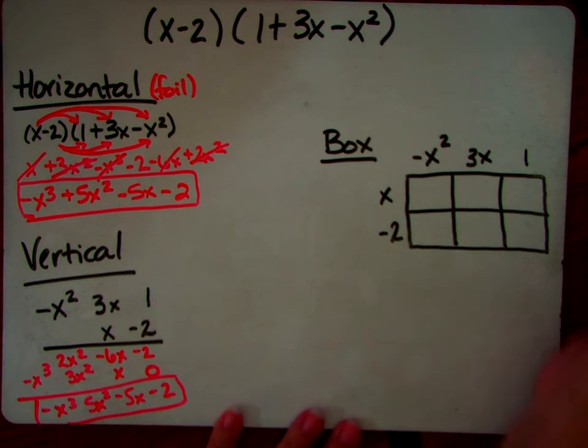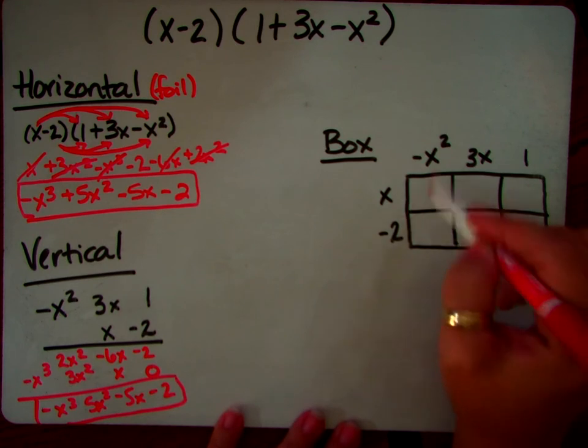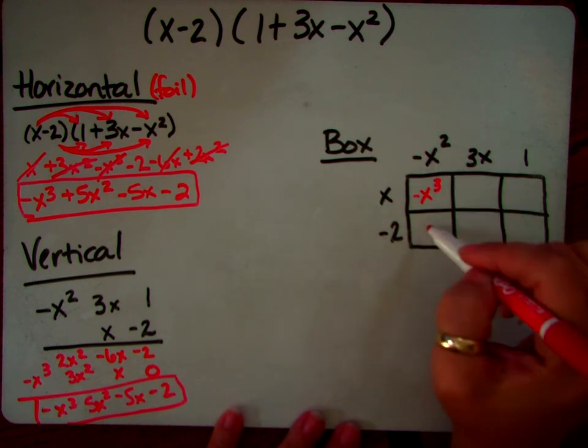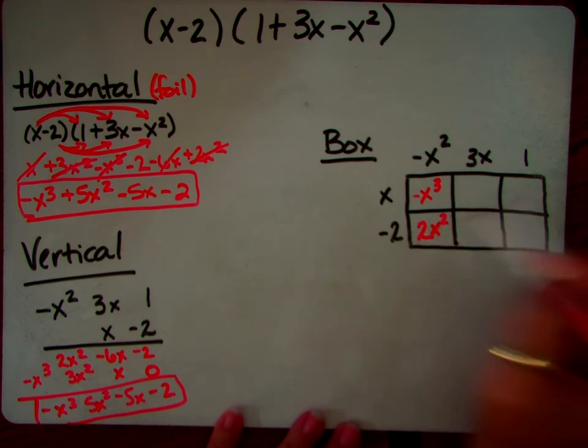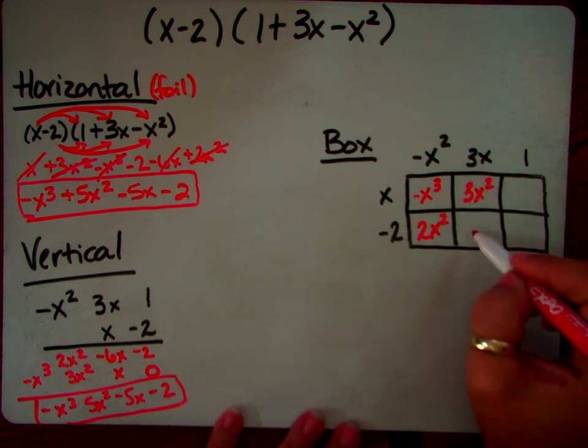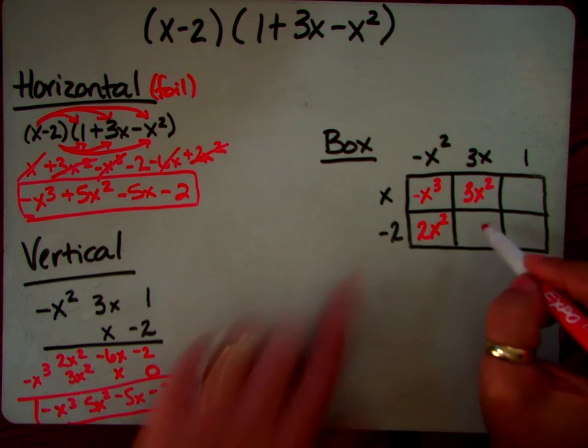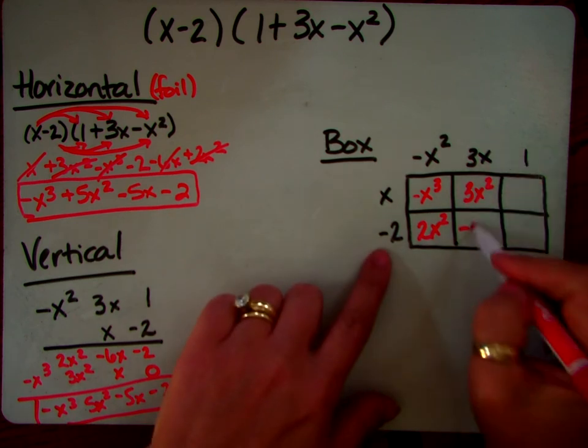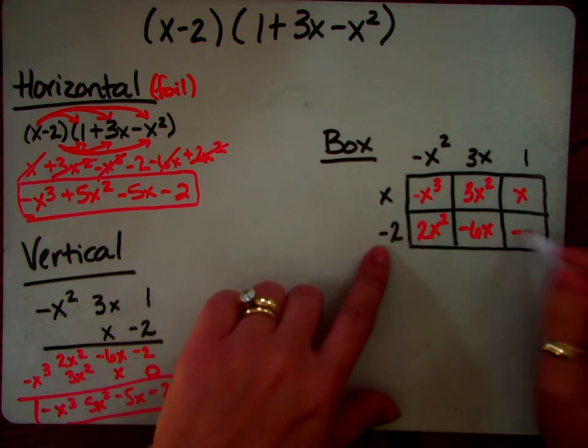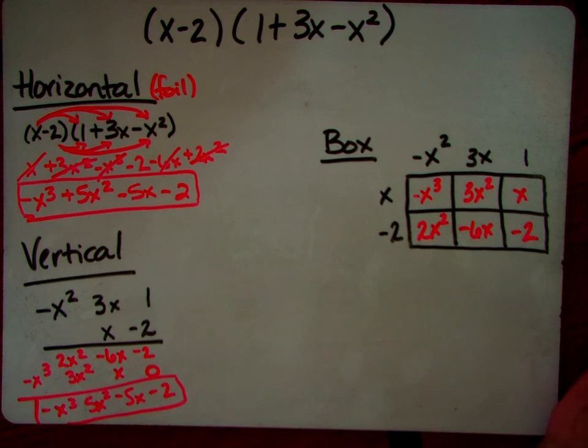Now with a box method, okay, imagine yourself standing here. You're going to go left and up. So x times negative x squared is negative x cubed. Here, a negative 2 times a negative x squared is a positive 2x squared. Here, a 3x times another x is a 3x squared. Here, negative 2 times 3x, so we're looking here and here, so negative 6x. Here, x times 1x, negative 2 times 1, negative 2.